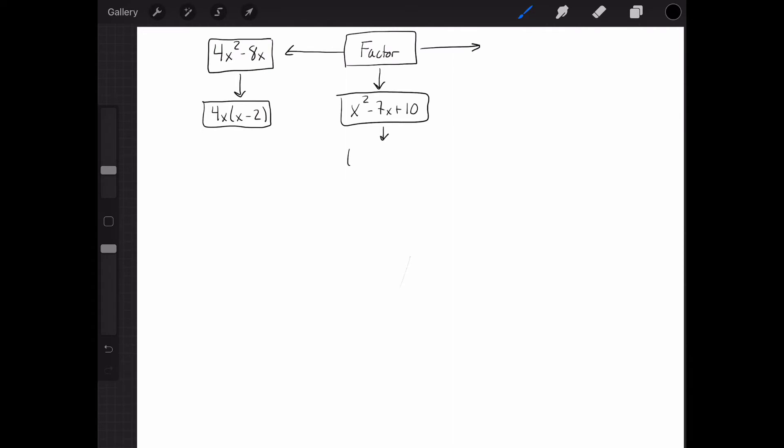Then move on to factoring trinomials where factors of the last term add or subtract to get the middle term. Don't forget those special factorings like the difference of squares where it factors into binomials because those factors of the last term are additive opposites of each other and cancel out.